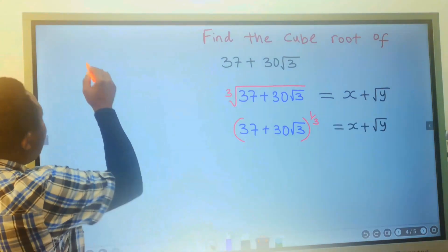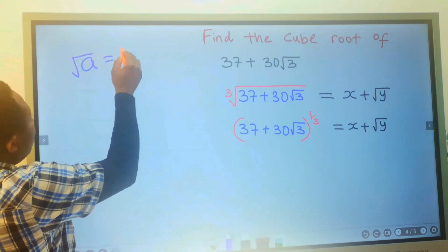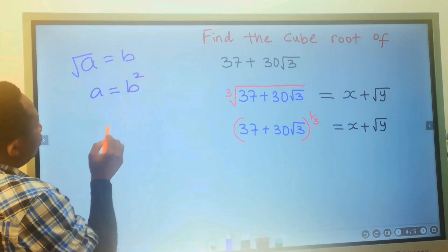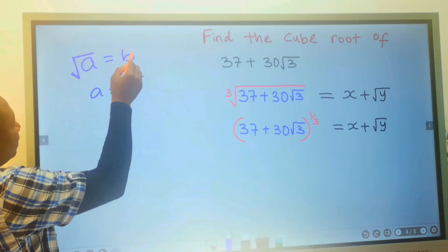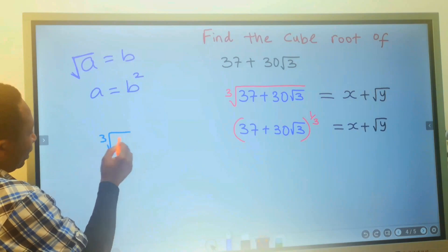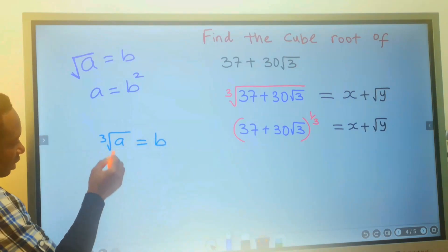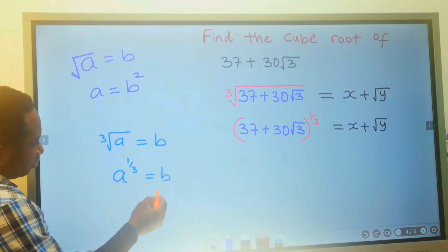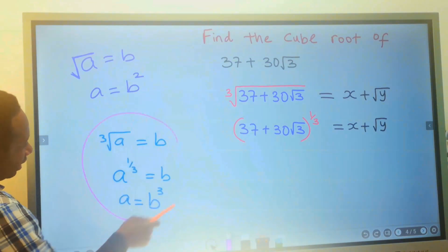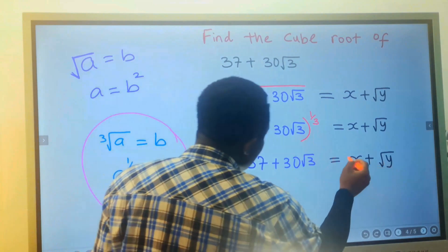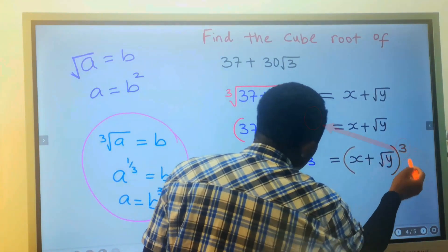Recall that if you have the square root of a equals b, then a equals b squared, because the square root on the other side becomes squared. Also, if you have the cube root of a equals b, this is the same as a to the power of 1 over 3 equals b, and a equals b to the power of 3. I will apply this to this question: the cube root on the other side will become to the power of 3.